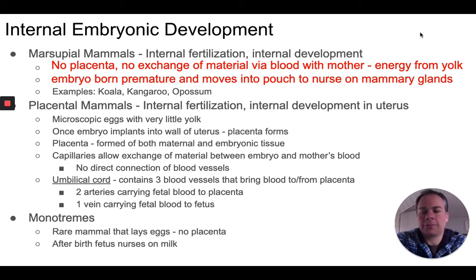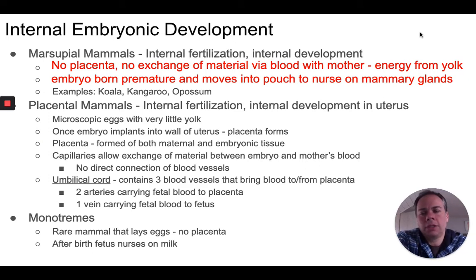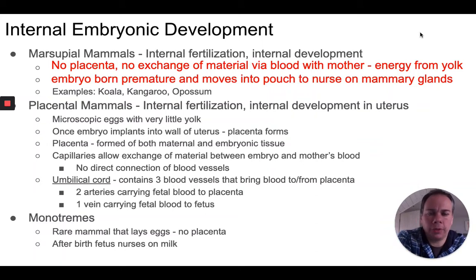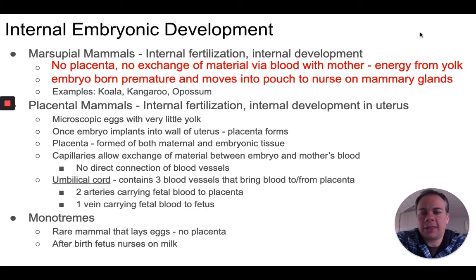Placental mammals have internal fertilization and internal development — the embryo and fetus develop inside the female uterus. Typically, placental mammals have very small eggs, almost microscopic, with very little yolk. Once the egg is fertilized, it implants into the wall of the uterus. The uterine lining contains blood vessels and thickened tissue that provides an area for the embryo to implant.